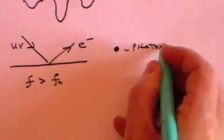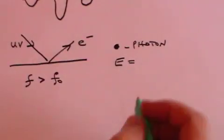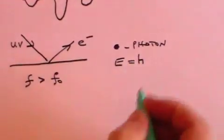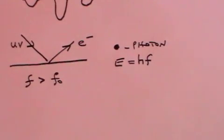And he said that each photon has an energy. And the energy is equal to a thing called Planck's constant, times the frequency of the light. So if you like, each photon is a little packet of energy of HF.